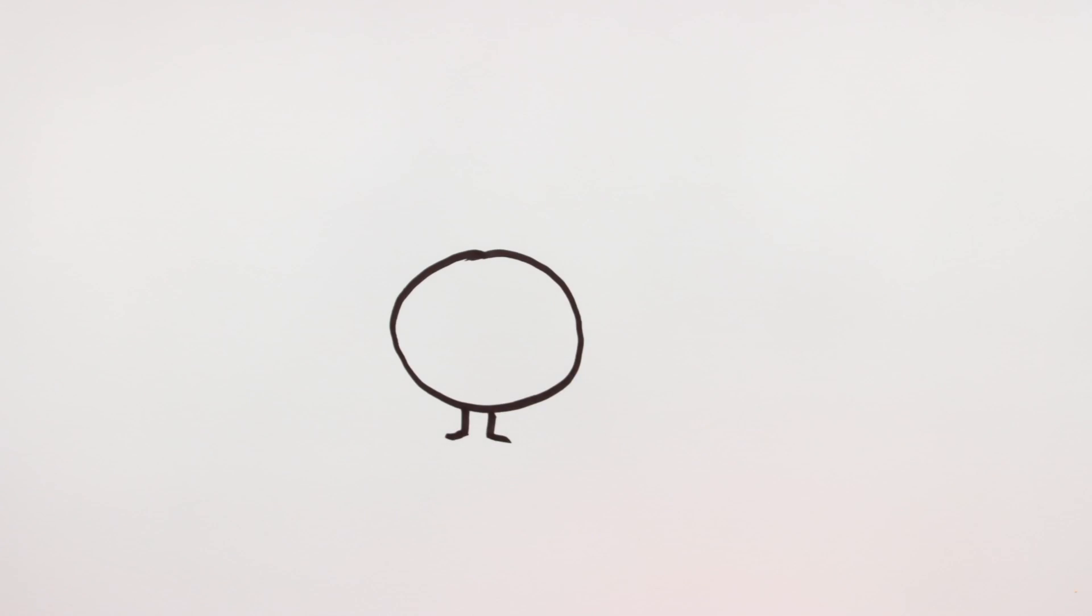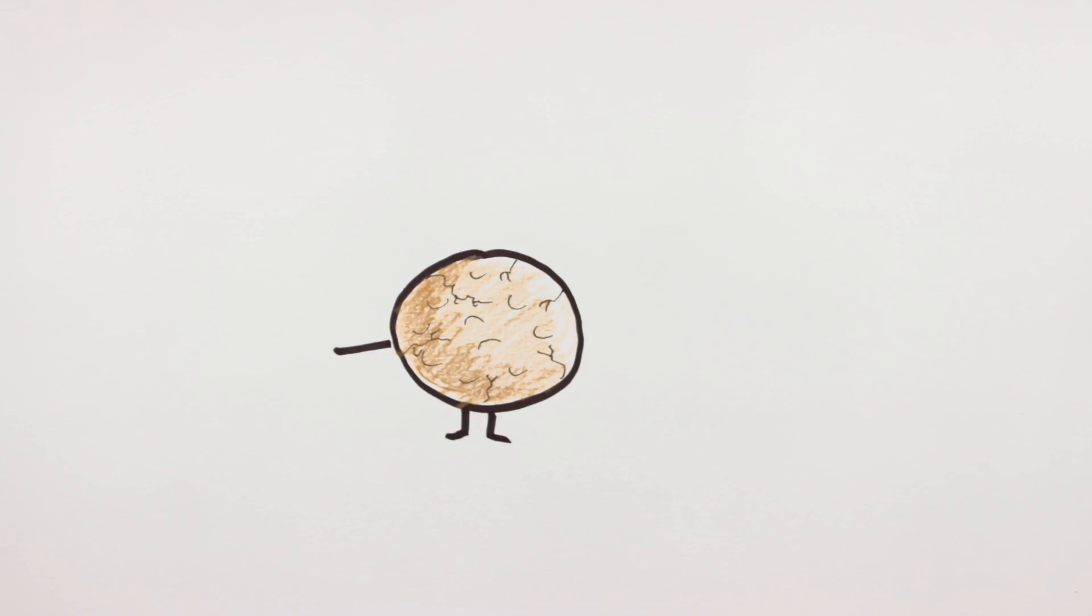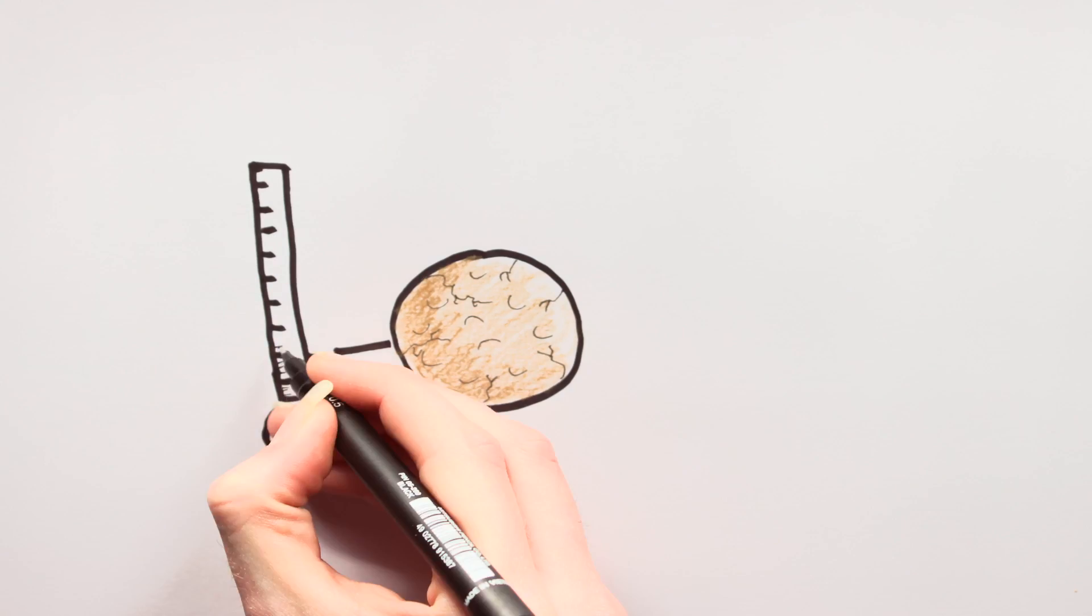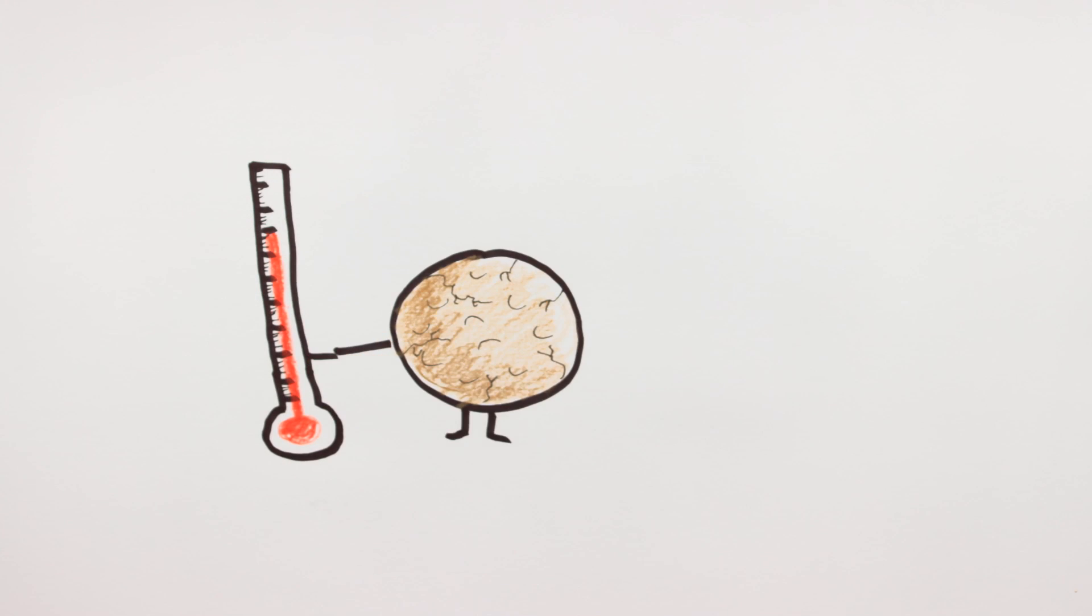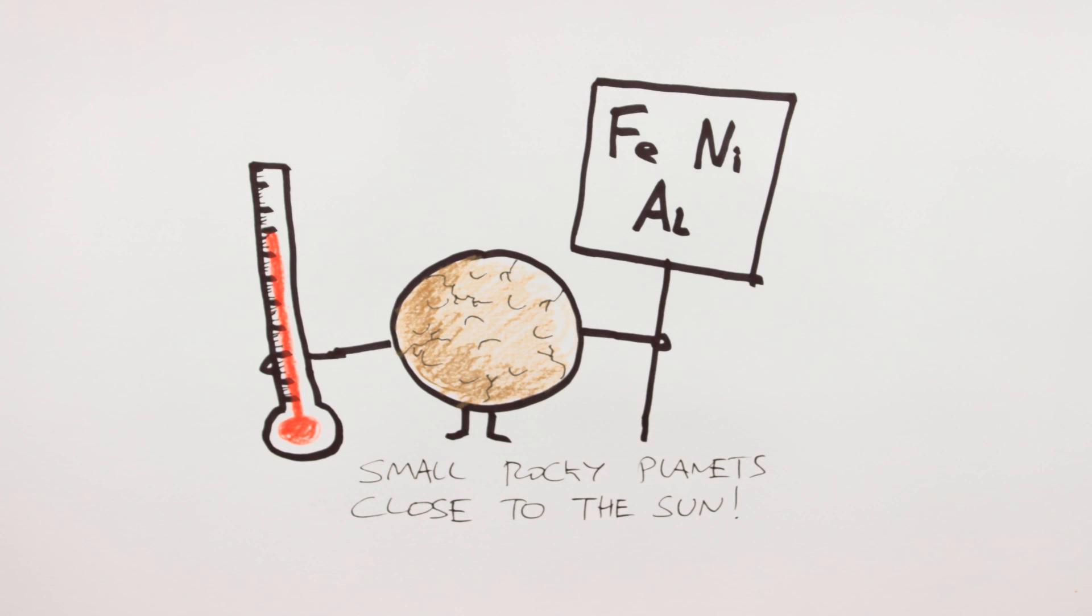Close into our sun, rocky planets formed, because the temperatures were high enough to allow for the accretion of high boiling point materials like iron, nickel, and aluminum. The rarity of these heavy elements placed an upper limit on how big rocky planets could grow.